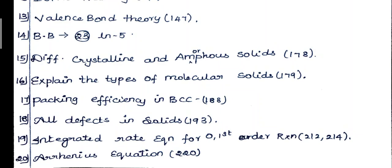19th Question: Integrated Rate Law for Zero Order Reaction and First Order Reaction — Pages 212 and 214. 20th Question: Derive the Arrhenius Equation. For 2 marks there is an abbreviation form, whereas for 5 marks there is the full derivation. It is an important question — Page 220.